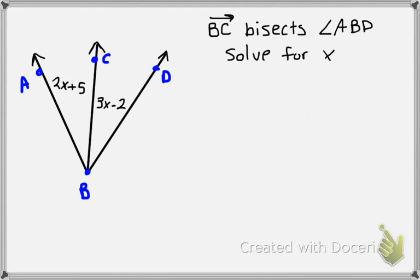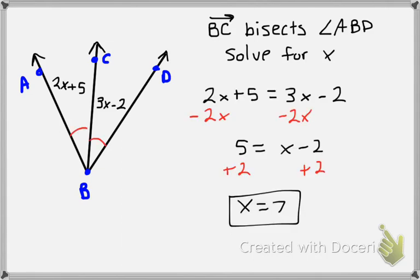So go ahead and pause the video one last time and give this problem a try. Okay, so remember if you see something like ray BC bisects ABD, you need to show that the two angles it creates are congruent. So you just set 2X plus 5 equal to 3X minus 2. When you solve for X, you get X equals 7.